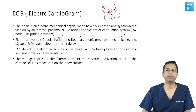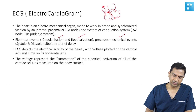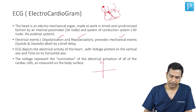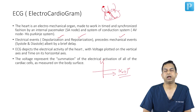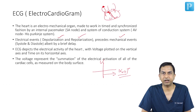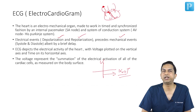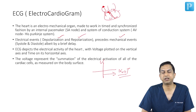The ECG depicts the electrical activity of the heart, with voltage represented on the vertical axis and time on the horizontal axis. It registers activity in both the atria and the ventricle. Atrial depolarization is recorded, but atrial repolarization is masked within the ventricular depolarization activity, so you do not actually see atrial repolarization on the ECG. The voltage in an ECG represents the summation of electrical activation of all cardiac cells as measured on the body surface.